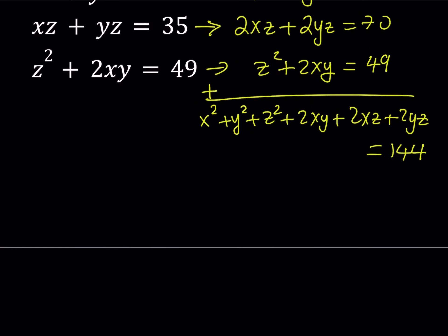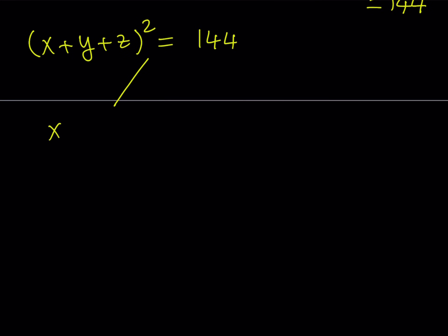The left-hand side of this equation is something well known — it is (x plus y plus z) squared. It is a perfect square, and 144 is also a perfect square, so everything is perfect. From here we get two solutions, since there are two numbers whose square is 144. The first is 12, so if x plus y plus z equals 12 we proceed from there.